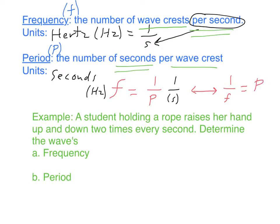Let's take a look at an example. A student holding a rope raises her hand up and down two times every second. Determine the wave's a) frequency and b) period. You should add this example into your notes. Two times every second means two per second, which means two Hertz.